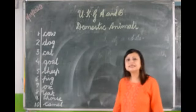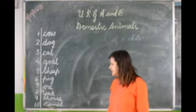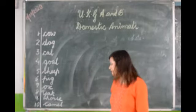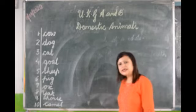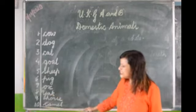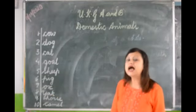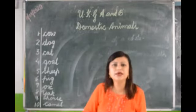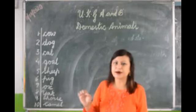And the last one is camel. C-A-M-E-L, camel. C-A-M-E-L, camel. So children, you are going to learn the names of these ten domestic animals. And write it down in your practice copy and learn the spellings by heart.